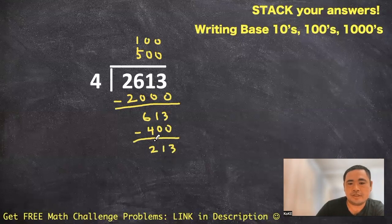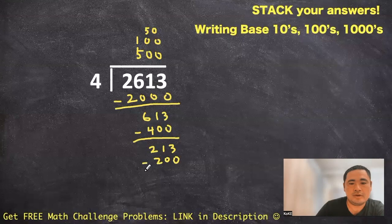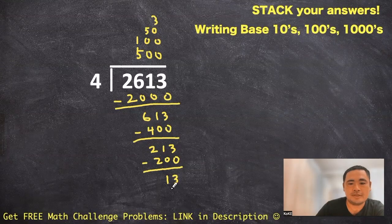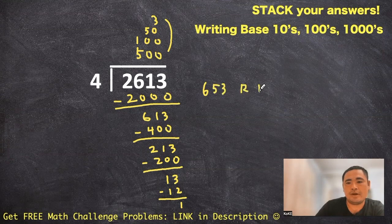All right. So now instead of the two thirteen, maybe we can think of it as two hundred. So we can fit that fifty times. So that's going to be two hundred here. Thirteen divided by four. We can fit that in three times and get a remainder of one. So if we add these all up right here, our answer is going to be six hundred and fifty three with the remainder of one.